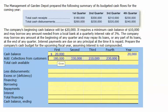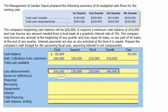Next, let's pick up our cash disbursements. Again, we're given those for the first, second, third, and fourth quarters.